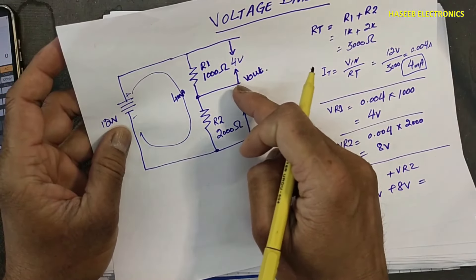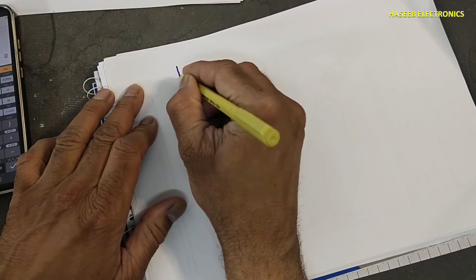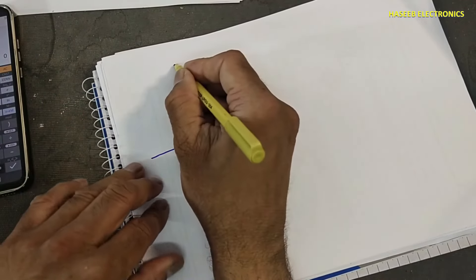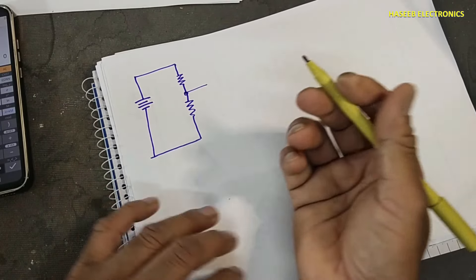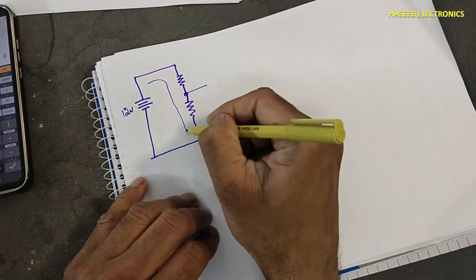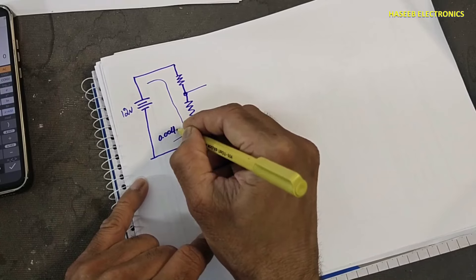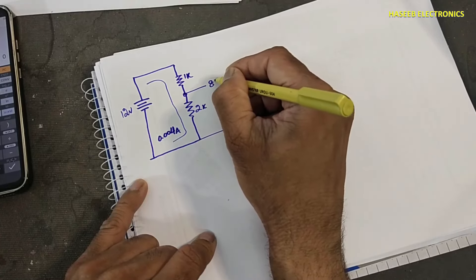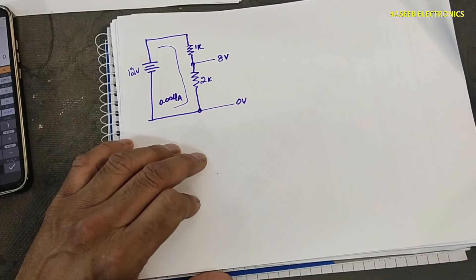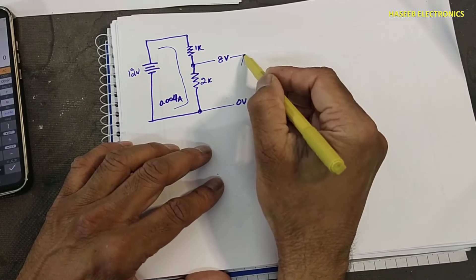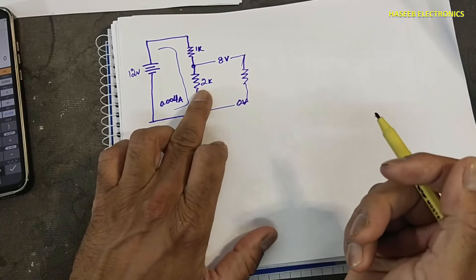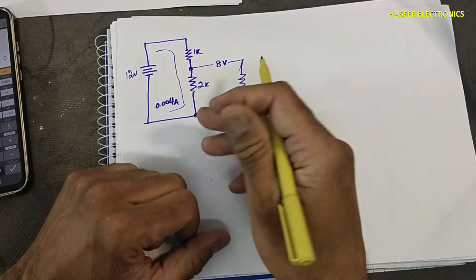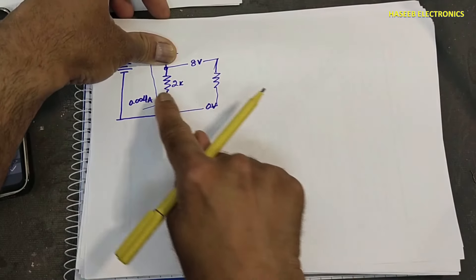The problem starts when we connect a load resistor in parallel to R2. Here is the first resistor and second resistor; this is the output point at 8 volts and 0 volts at ground. Now if we connect any load resistance across R2 — because we use the voltage divider to bias or provide voltage to any circuit — two resistors are now in parallel.